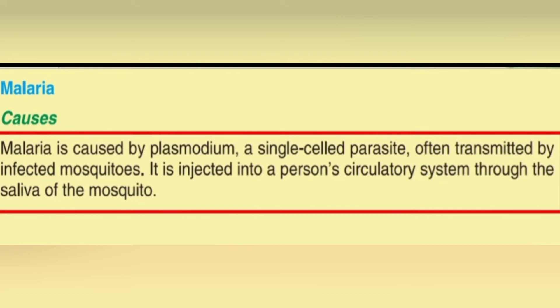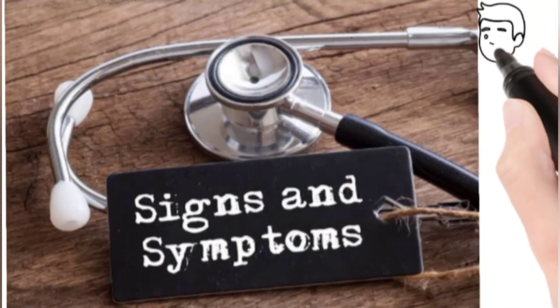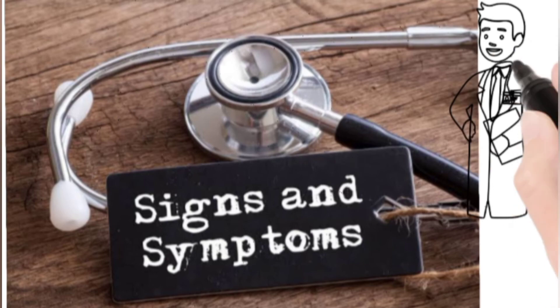Within 48 to 72 hours, the parasite inside the red blood cells starts to multiply, infecting the red blood cells until they burst. The newly developed plasmodium bursts the red blood cells and kills all the cells. This can also lead to severe liver infection. We have now discussed the causes of malaria.